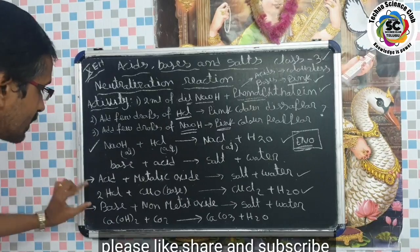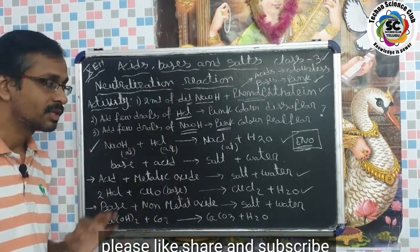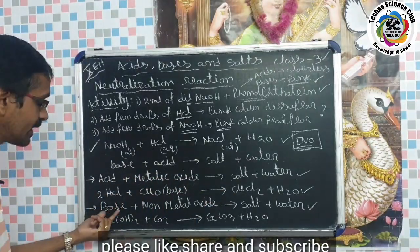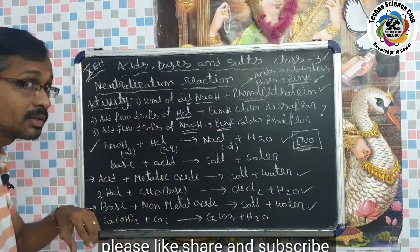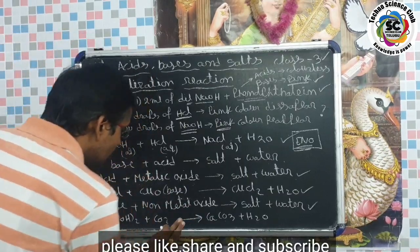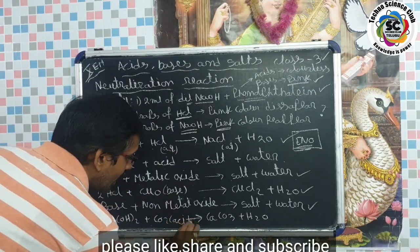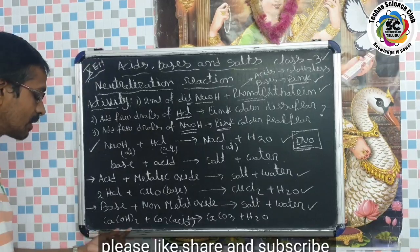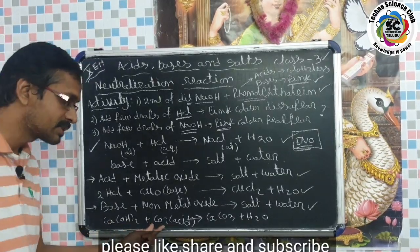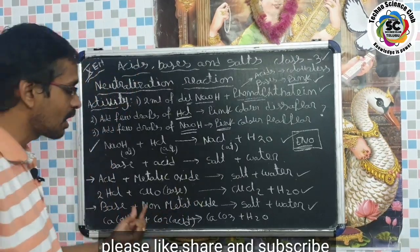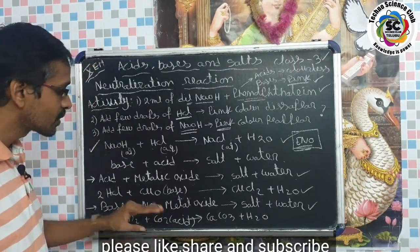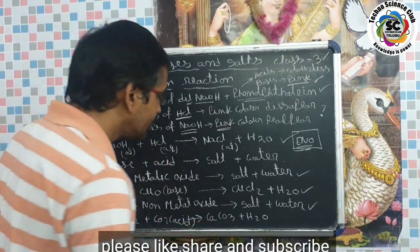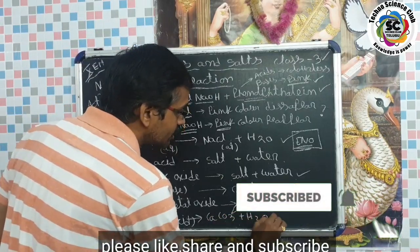Another important point: a base reacts with non-metallic oxides to give salts and water. This is also like a neutralization reaction. Non-metallic oxides have acidic nature — they act as acids and react with bases to form salt and water. For example: Ca(OH)₂ (calcium hydroxide, a base) reacts with CO₂ (carbon dioxide, a non-metallic oxide with acidic nature) to form CaCO₃ (calcium carbonate, a salt) + H₂O.